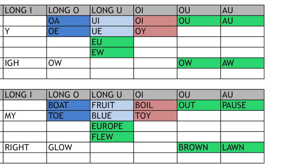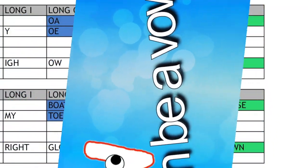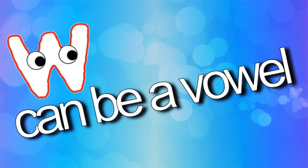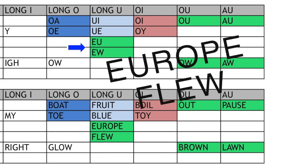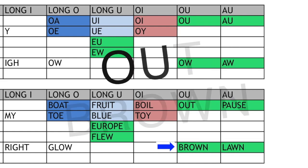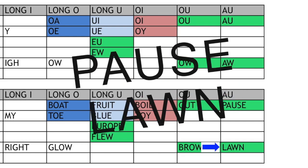Now let's go green. Old English words don't end in U, so U changes to a W: EU/EW, OU/OW, and AU/AW. W is actually working as a vowel — check out the 'W can be a vowel' YouTube video for a complete explanation. EU within the word, EW at the end: 'Europe,' 'flew.' OU/OW: 'out,' 'brown.' AU within, AW within or at the end: 'pause,' 'lawn.'